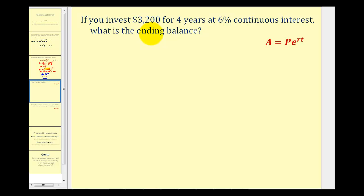If you invest $3,200 for four years at 6% continuous interest, what is the ending balance? So A, the amount after, is equal to P, the principal or starting amount, 3,200 times e raised to the power of r times t. R is the interest rate and t is the time in years. So r is equal to 6%, which must be expressed as a decimal, which would be 0.06. If we drop the percent sign and divide by 100, this would be our decimal. So we have 0.06 times t, t is four, or four years.